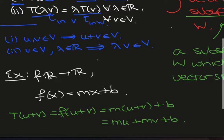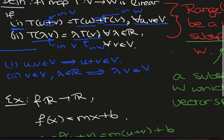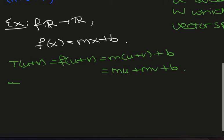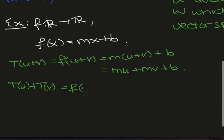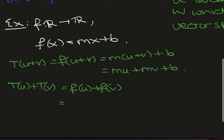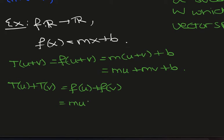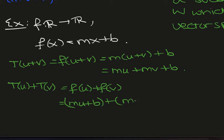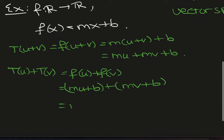Now we need to compare this with T(u) + T(v). So T(u) + T(v) is just F(u) + F(v). Now F(u) is just mu + b and F(v) is mv + b. If we add these together, what do we get? mu + mv - there's a b term here and a b term here, so I get 2b.